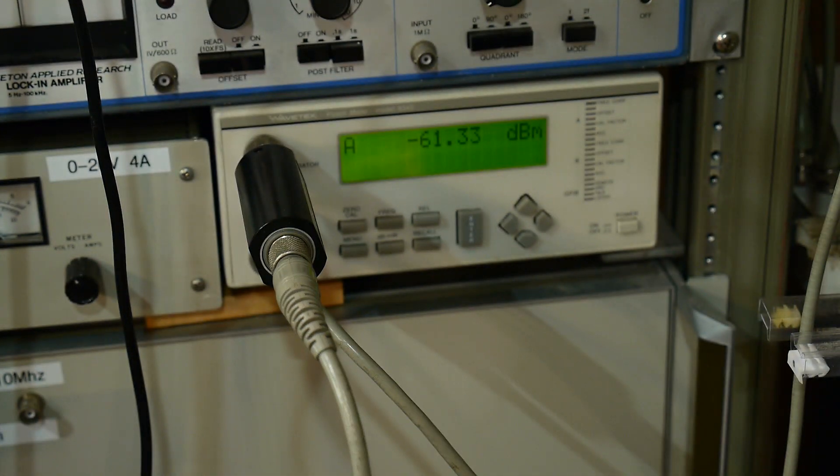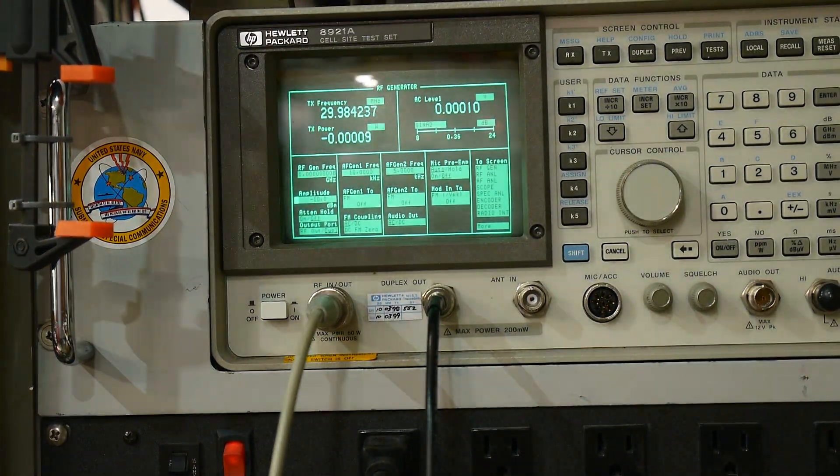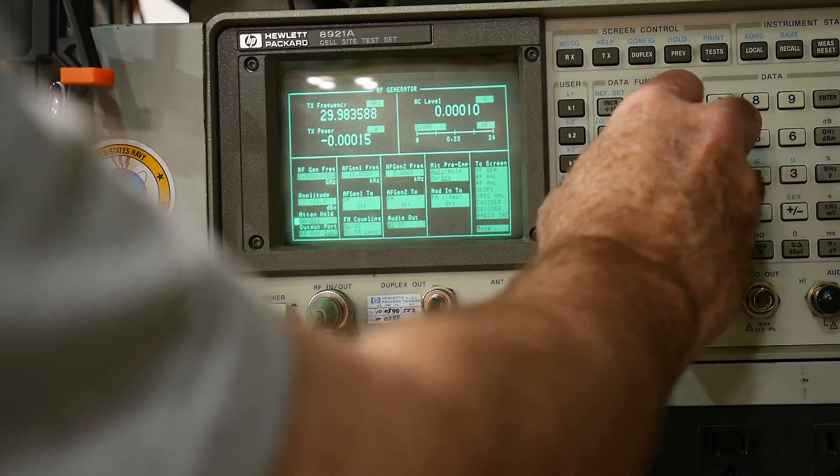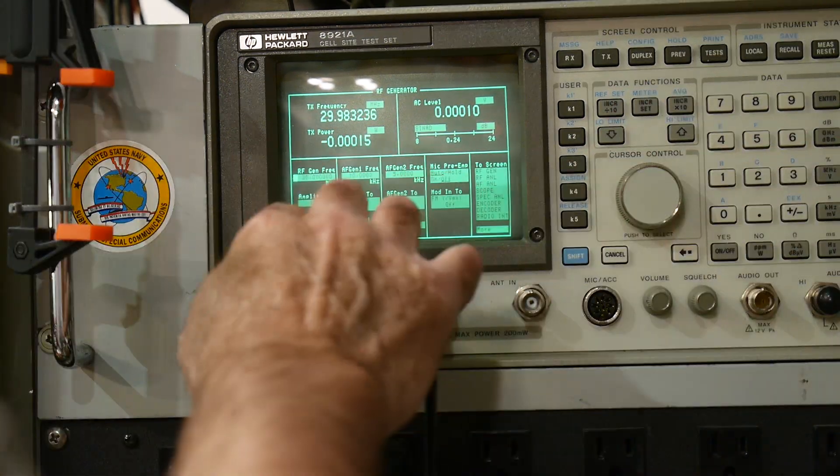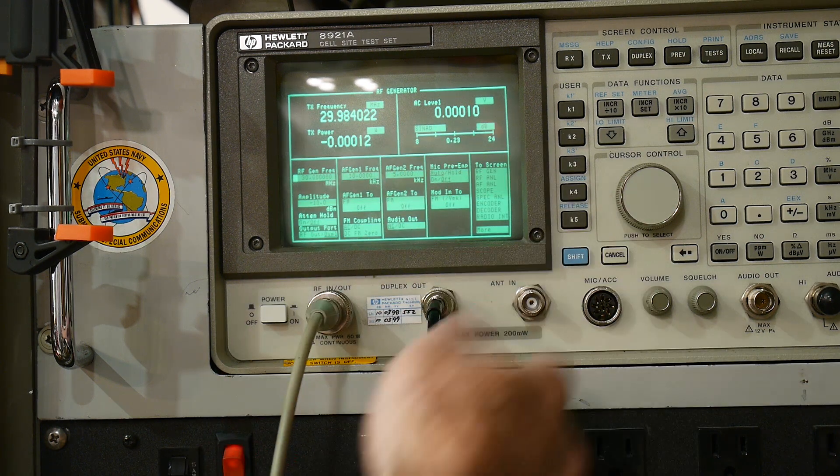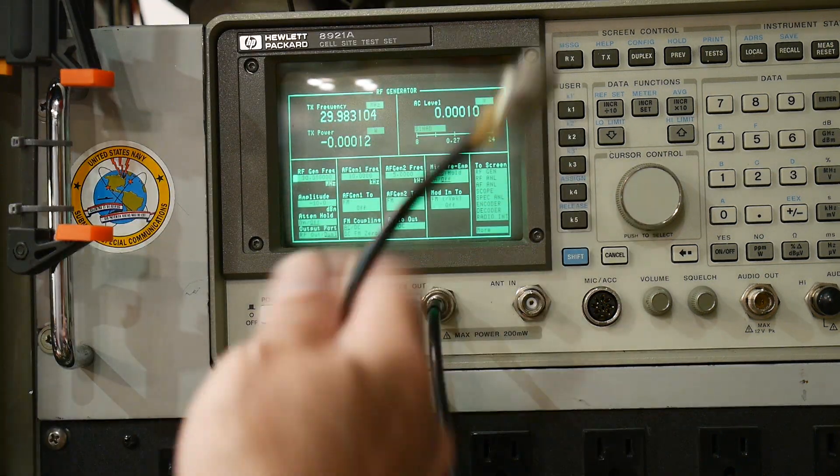So the correct way to do that is with a power meter that's very accurate, or a scalar network analyzer, which is just a power meter that you can sweep over frequency. But since this is two data points and I don't have a scalar network analyzer anymore, we'll do it with two data points. So we'll set up our generator. So we have our generator set up. The first data point was 30 megahertz. So we're going to output 30 megahertz on this connector here.